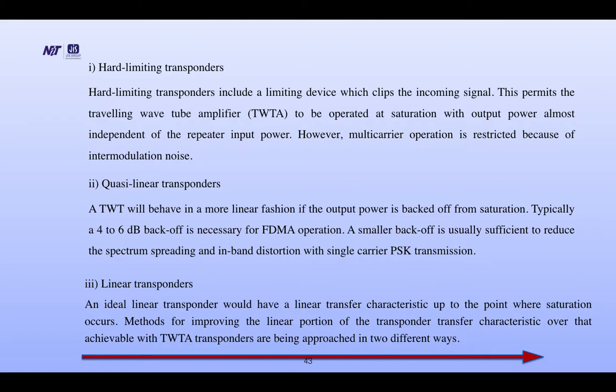Quasi-linear transponders: a TWT will behave in a more linear fashion if the output power is backed off from saturation. Typically, a 4 to 6 dB back-off is necessary for FDMA operation. A smaller back-off is usually sufficient to reduce spectrum spreading and in-band distortion with single-carrier PSK transmission. Linear transponders: an ideal linear transponder would have linear transfer characteristics up to the point where saturation occurs. Methods for improving the linear portion of the transponder transfer characteristics over that achievable with TWTA transponders are being approached in two different ways.